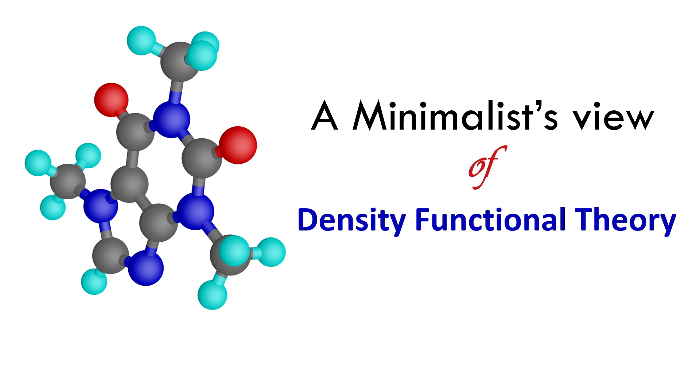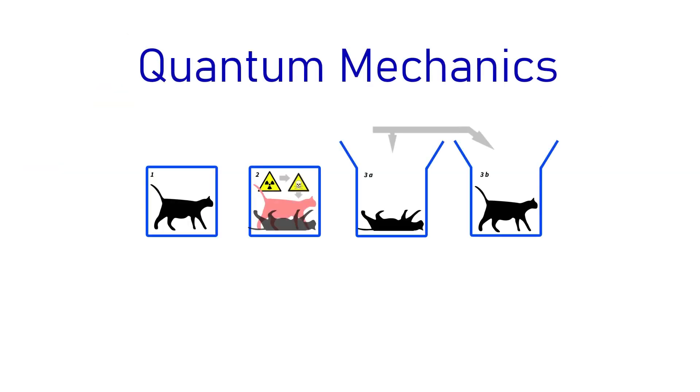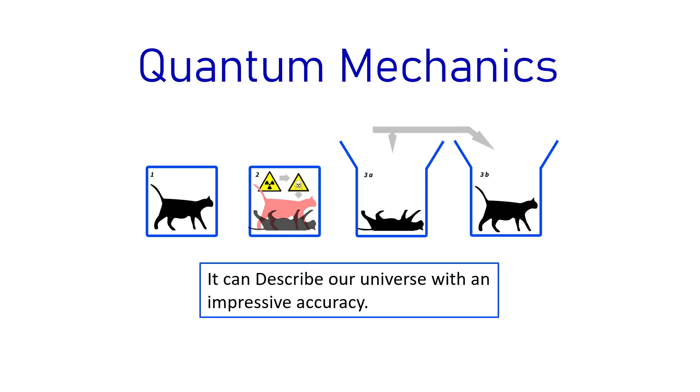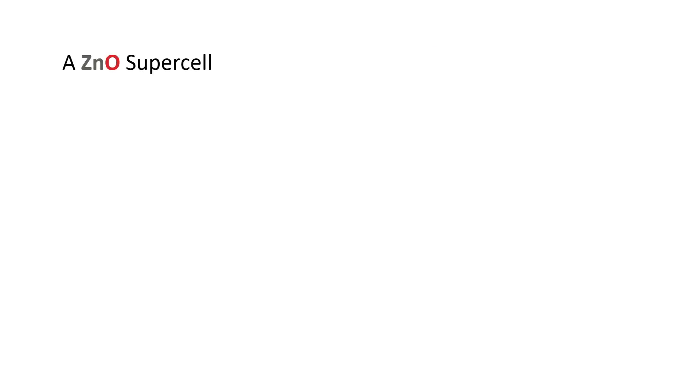We all know that quantum mechanics is extremely effective to explain our surrounding and universe with an impressive level of accuracy. Let's see how we can apply quantum mechanics to our problem. Let us imagine a situation where we would like to describe the properties of some well-defined collection of atoms. For example, let us consider a zinc oxide crystal, so here we have zinc and oxygen atoms.